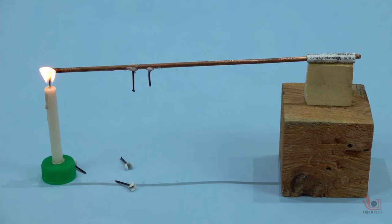If you observe carefully, you will notice that the nail nearest to the candle flame falls down first, then the second nail, and so on.